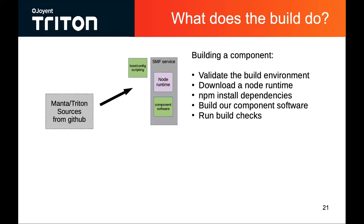We take our Manta or Triton sources, and the very first thing we do is validate the build environment is correct for this particular component. Each of the components we've got has got some metadata in the build makefile itself that describes what the environment ought to be for that particular component. Typically it's just checking the pkgsrc version, and we do some additional checks to make sure the build machine is configured correctly. For example, if you're building as non-root, we make sure that you've got some privileges to elevate your user account privileges for particular parts of the build.